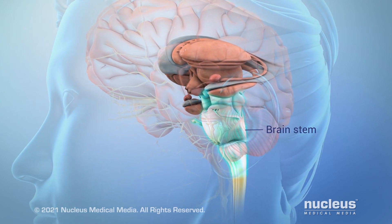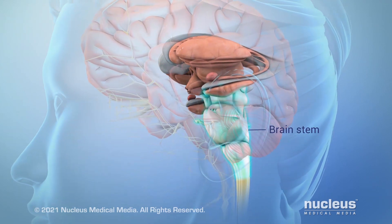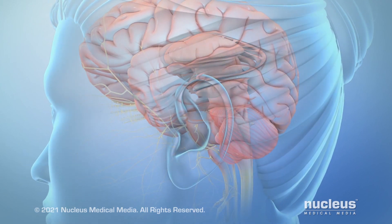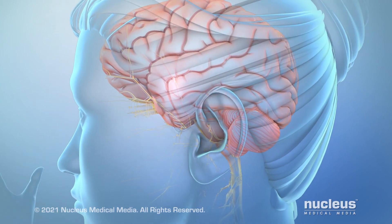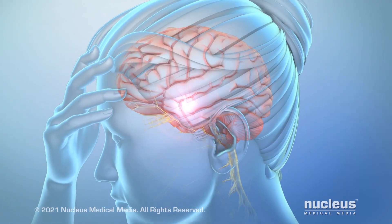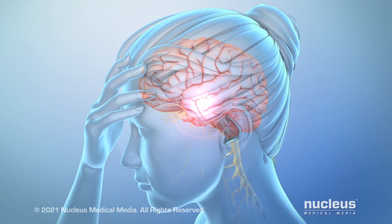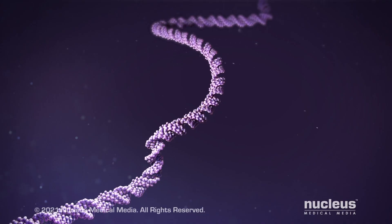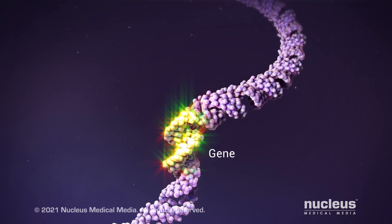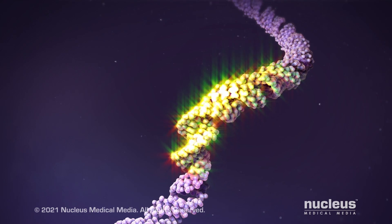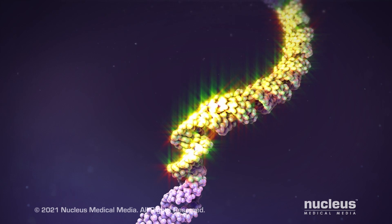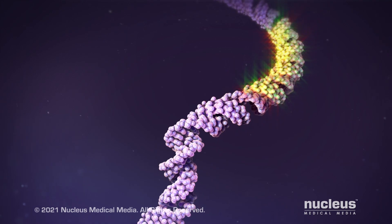The brainstem helps control sleep, heart rate, and breathing. Migraine is a disease where one or more parts of this communication system does not function properly. Many sections of DNA, called genes, program ion channels, neurotransmitters, and other structures that support these nerve pathways.